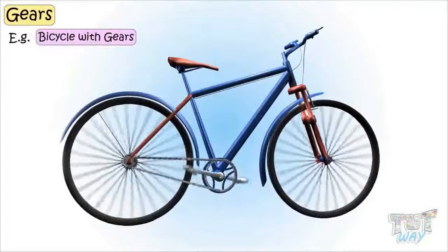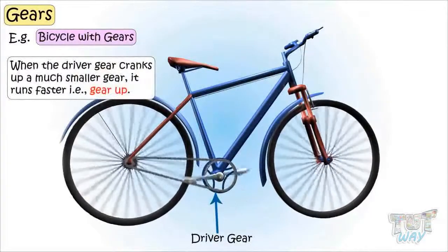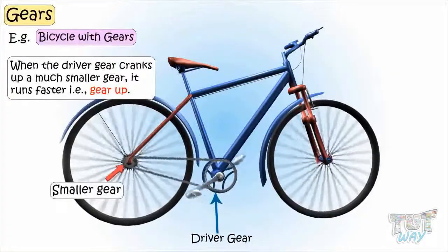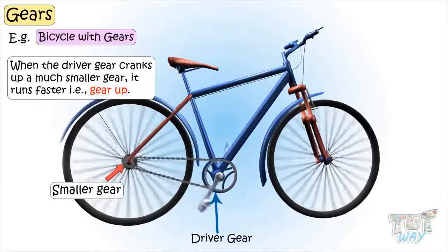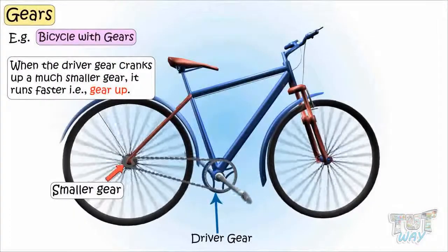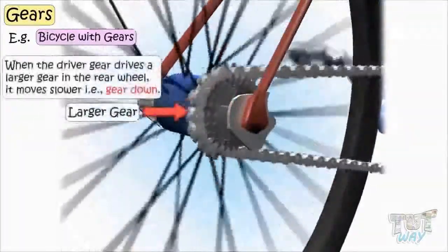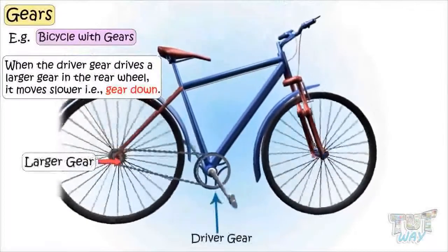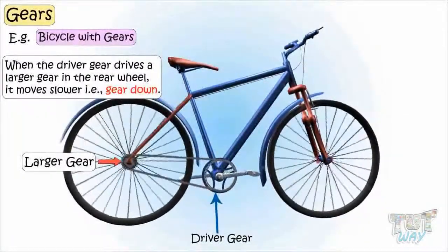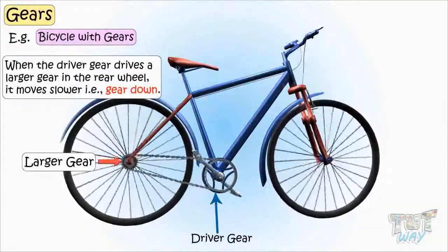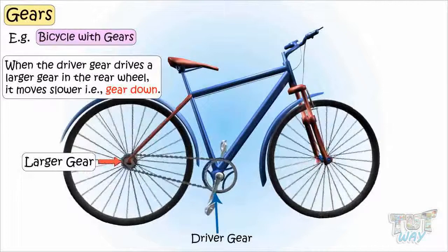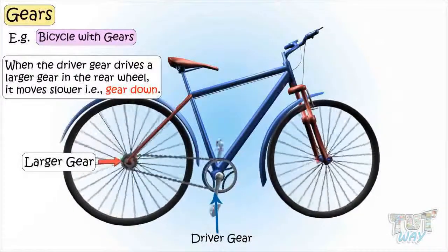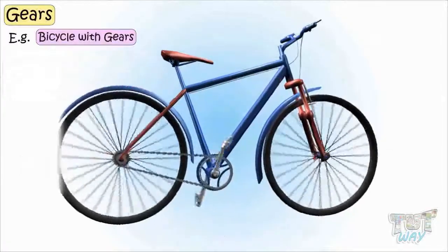When the driver gear cranks a much smaller gear, it runs faster and so does your cycle — this is gearing up. When the driver gear drives a larger gear in the rear wheel, it moves slower and so does your cycle — this is gearing down. Gearing down means the driver gear drives a larger gear, and gearing up means the driver gear turns a smaller gear.